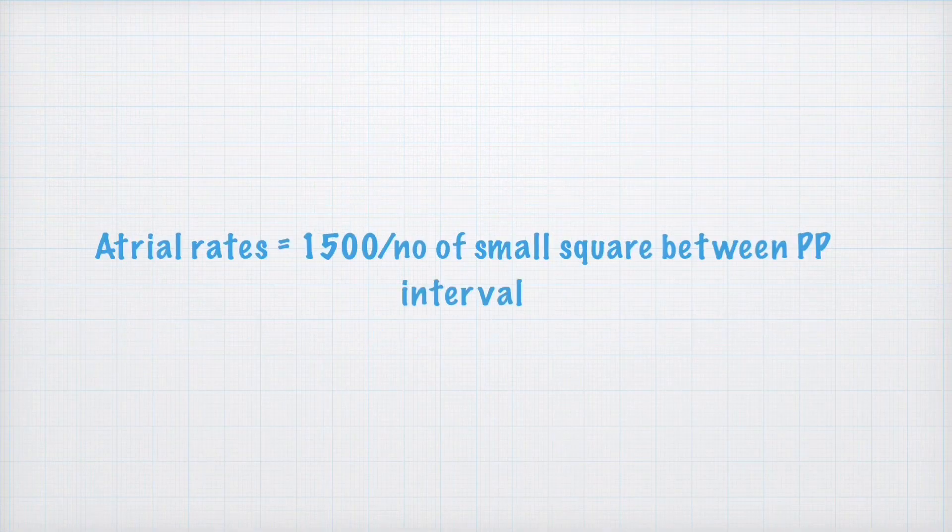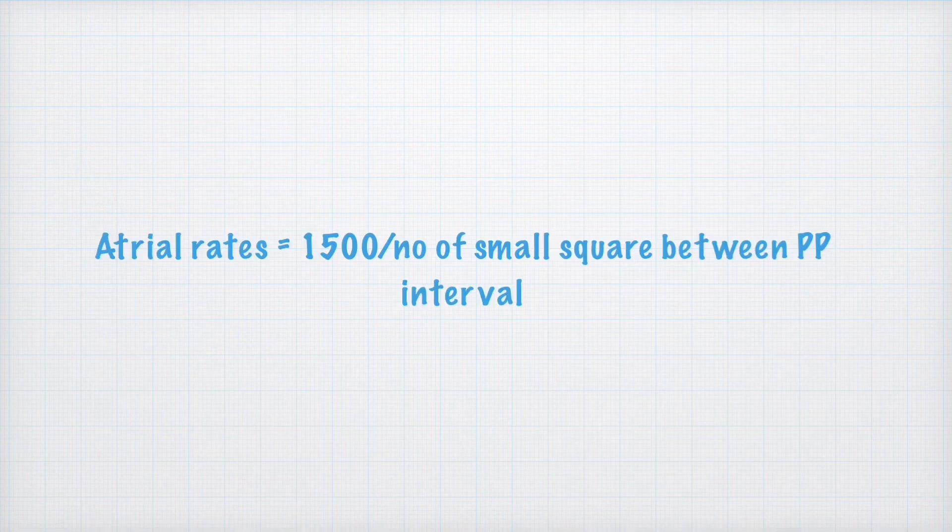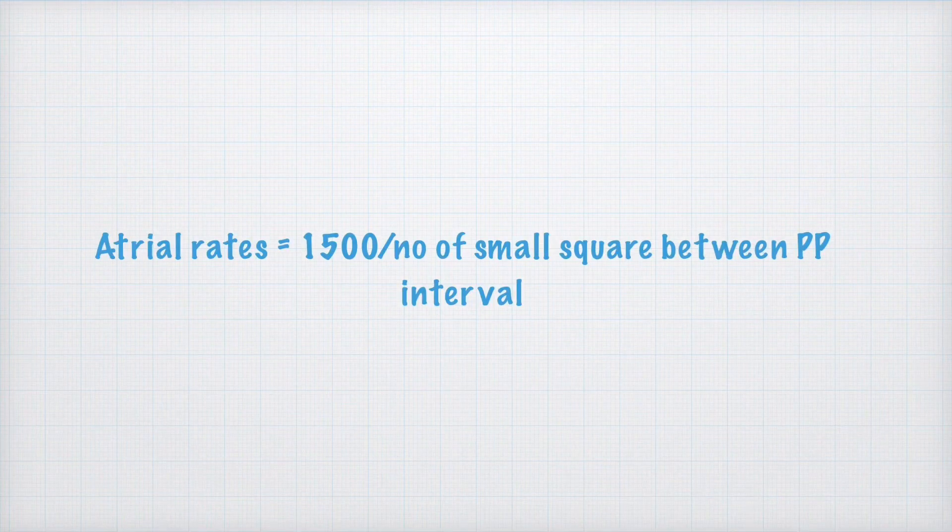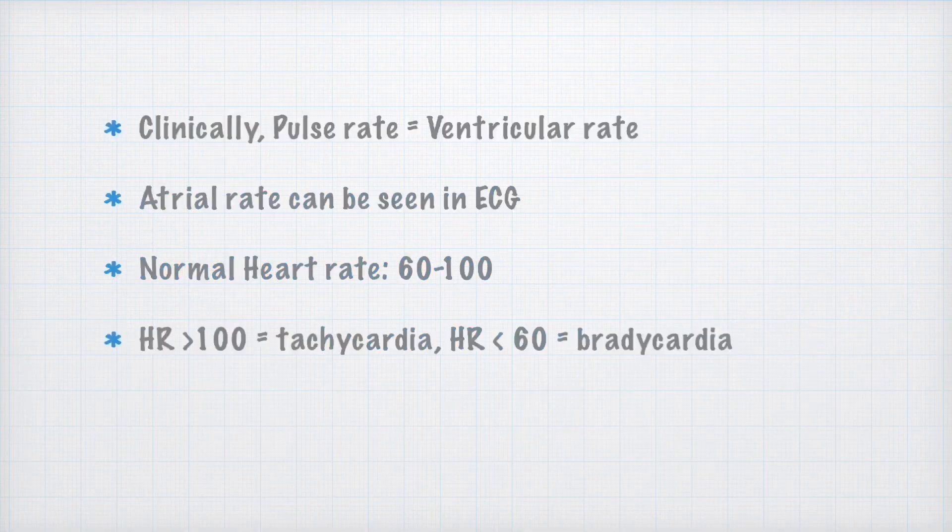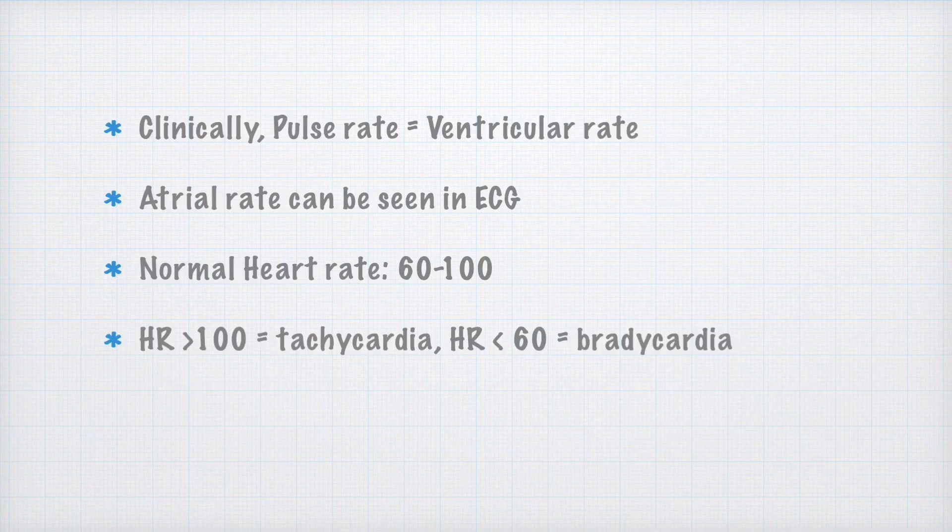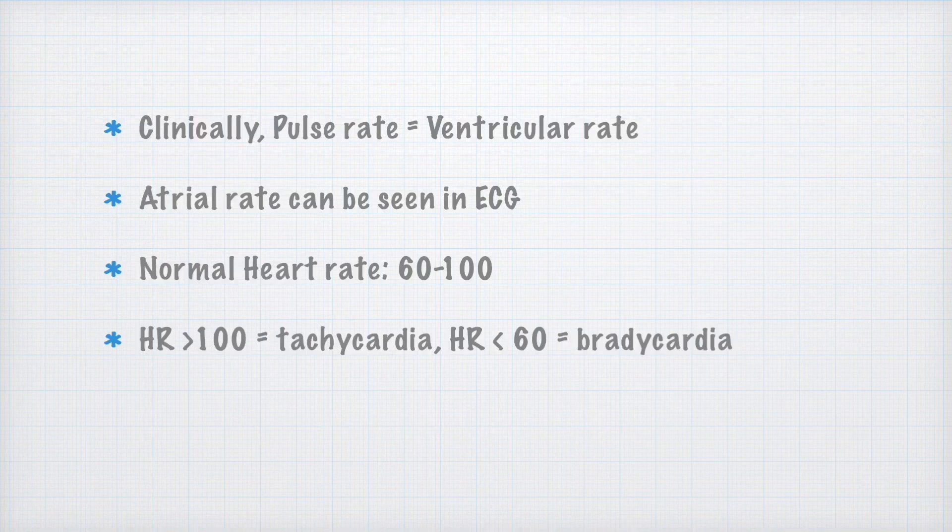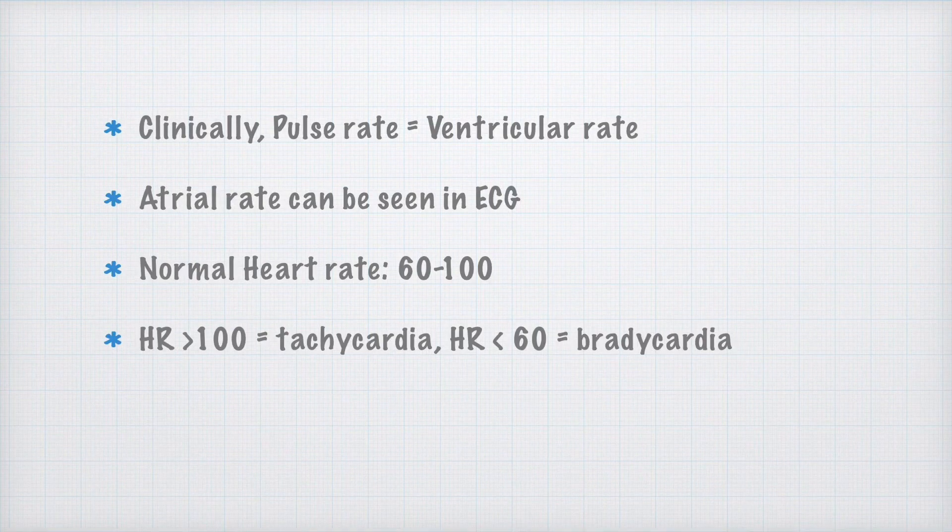RR interval actually measures the ventricular rate. In total heart block, where P waves don't correspond with QRS complexes, atrial rate should be calculated separately by measuring the number of small squares between P waves and divide 1500 by this number. So atrial rate equals to 1500 divided by number of small squares between PP interval. Clinically, palpation of pulse is equal to ventricular rate. Atrial rate can be seen only in ECG. Normal heart rate is between 60 to 100. Heart rate below 60 is called bradycardia, and heart rate above 100 is called tachycardia.